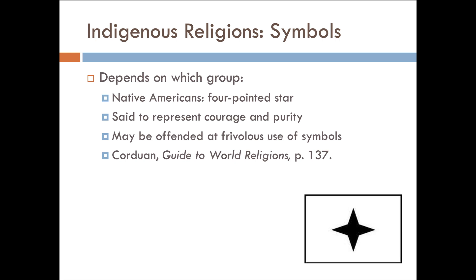Let's talk briefly about their symbols. It will depend on which group we're talking about — the symbols for African indigenous traditions and North American indigenous traditions are going to be different. In North America, the Native Americans hold in high esteem the four-pointed star, said to represent courage and purity. Some practitioners of indigenous religions can be offended at the frivolous use of some of their symbols. For instance, what do we put on top of our Christmas tree? A star — and that star has a rich history in indigenous traditions. That's an argument made by Wynn Kordoran in his book Guide to World Religions, page 137.